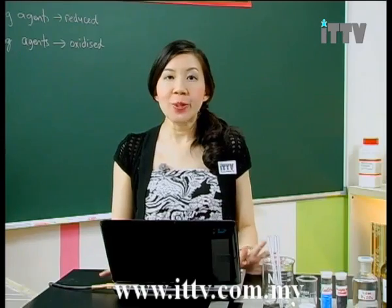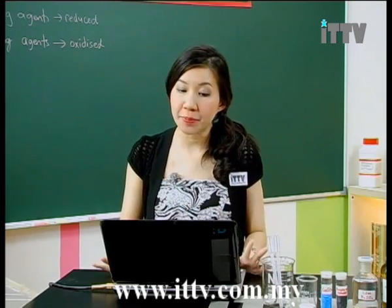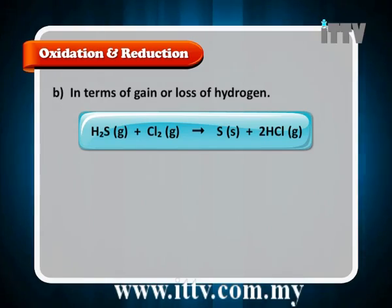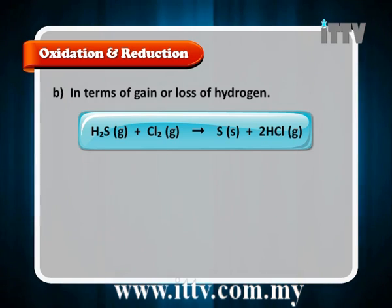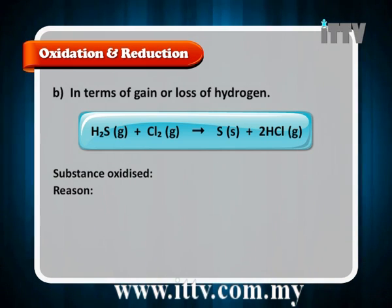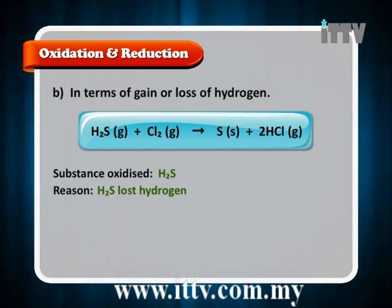Now let us look at another example where we define oxidation and reduction in terms of gain or loss of hydrogen. Consider the equation whereby gaseous hydrogen sulphide reacts with chlorine gas to produce sulphur and hydrogen chloride. The new parameter is gain or loss of hydrogen. The substance oxidised is hydrogen sulphide, because hydrogen sulphide has lost hydrogen — if it loses hydrogen, it is oxidised.